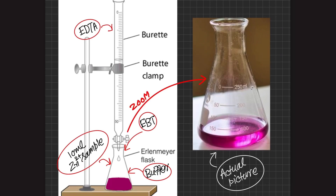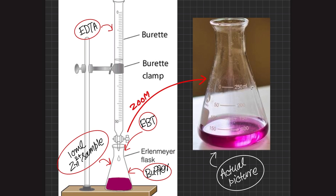In the experimental setup, EDTA is taken in the burette whereas 10 mL of sample solution is taken in the flask. We add a buffer such as liquid ammonia to ensure the pH is 10 or above, then add Eriochrome Black T indicator. The actual color of Eriochrome Black T is bluish, but as soon as it is added to the solution it immediately forms a complex with zinc and the color turns wine red.